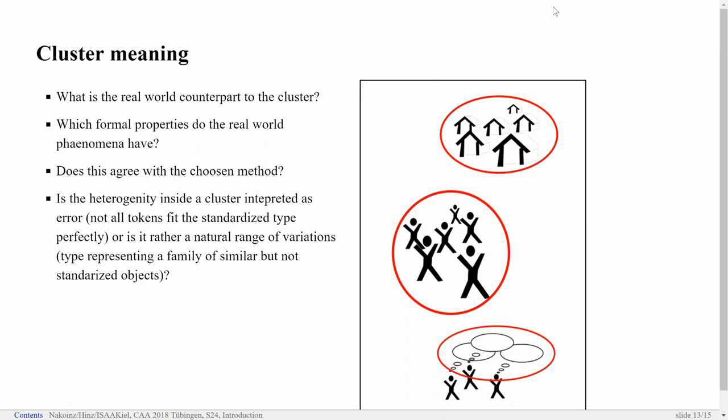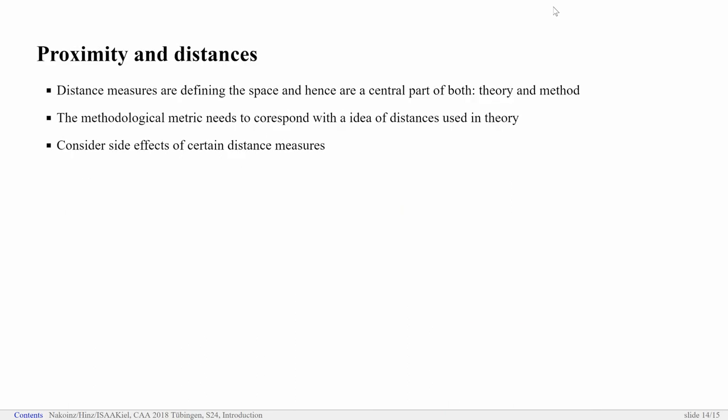And also, for example, heterogeneity within the cluster. Is that something that you would consider as copying error from a cultural evolution perspective or so? Or is that something that would be allowed for these groups? Should everything within the cluster be as similar as possible? Or is there a certain range and how can you address this certain range of variability within the clusters?